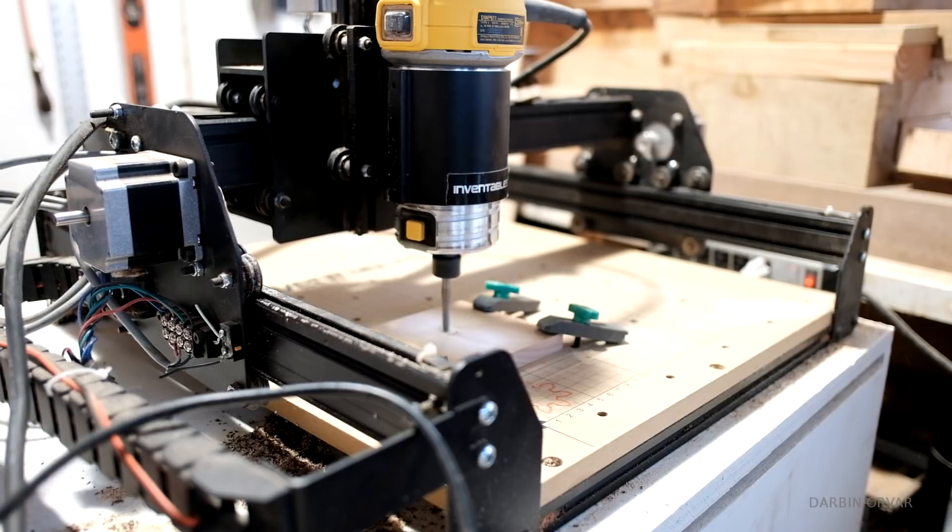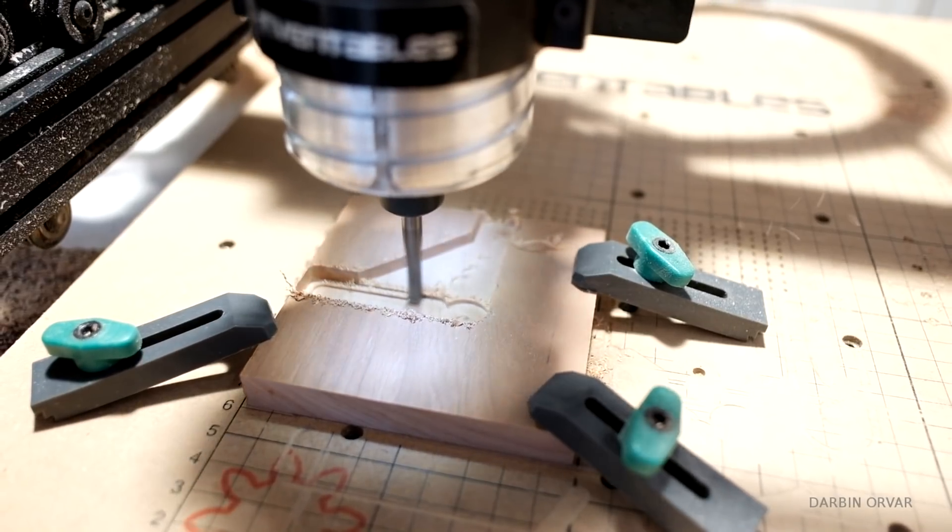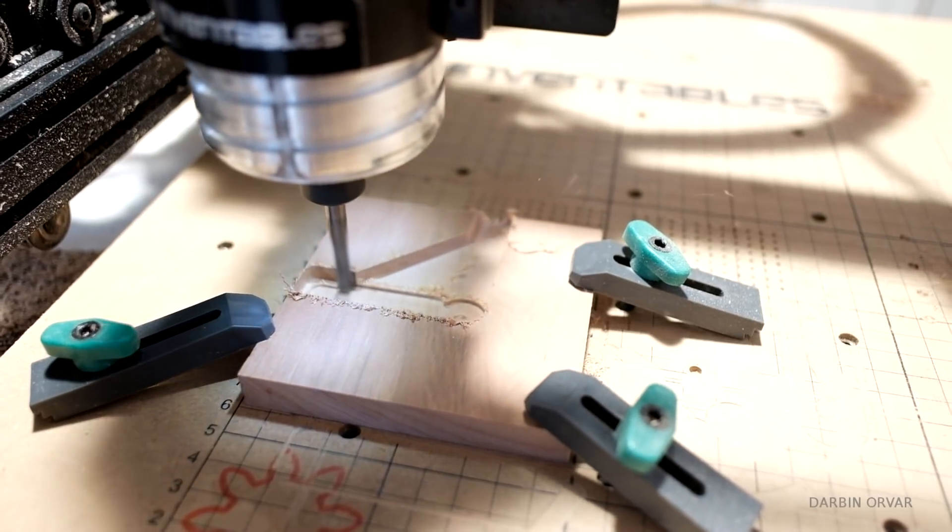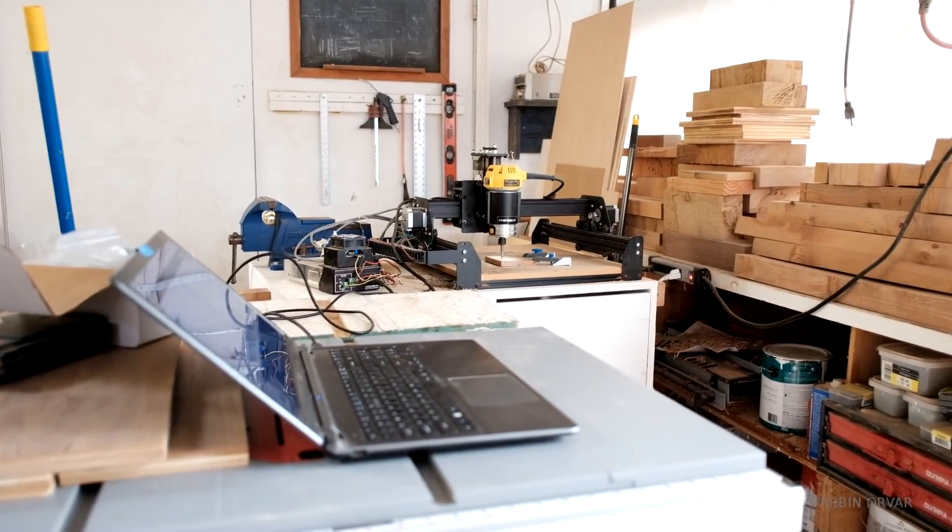So using the CNC machine here to carve out some channels in each bottom cherry piece. However, if you don't have a CNC machine, you could definitely use a chisel, or a router if you manage to clamp the wood down right.